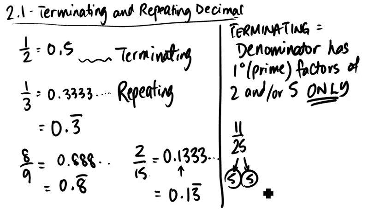However, if it was 11/26, which is now prime factorized into 2 and 13, 2 normally would cause it to terminate. However, the presence of the 13 would make this fraction repeat.